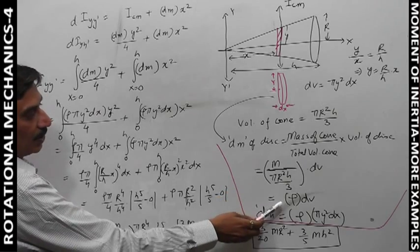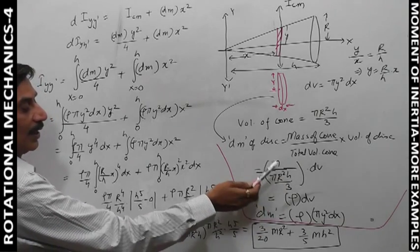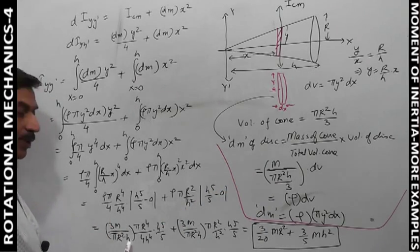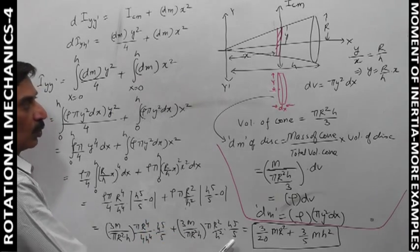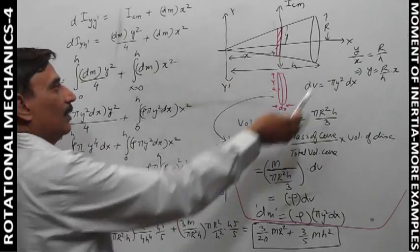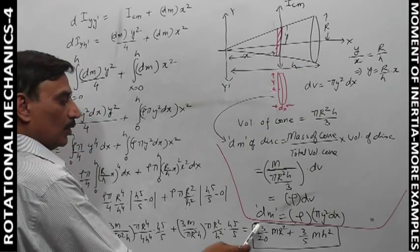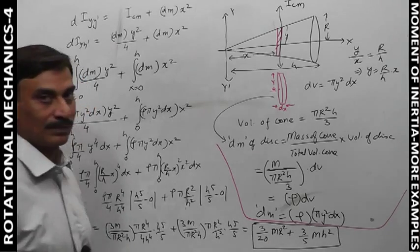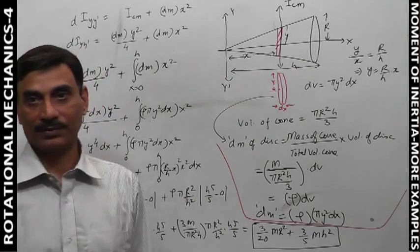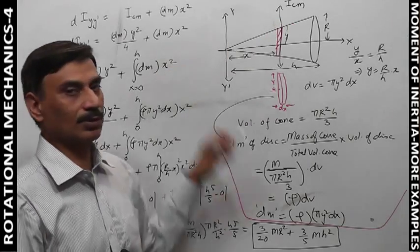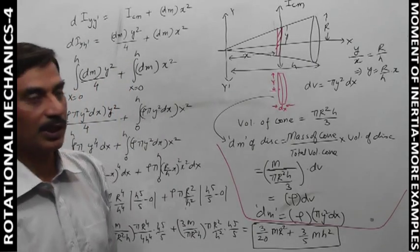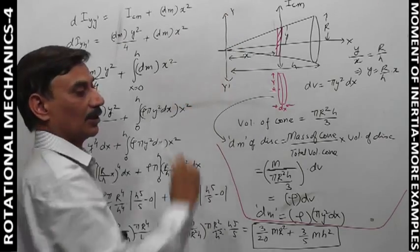Solving this, substituting ρ = 3m/(πr²h) · (3/πr²h), the π and r² cancel. The final moment of inertia of the right circular solid cone of mass m, radius r, and height h about the yy' axis is Iyy' = (3/20)mr² + (3/5)mh². This is the moment of inertia about this particular axis. We can also find the moment of inertia about other axes similarly.